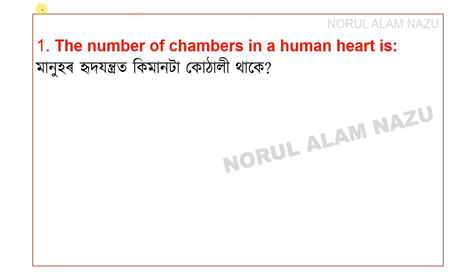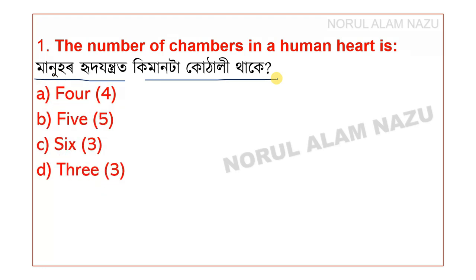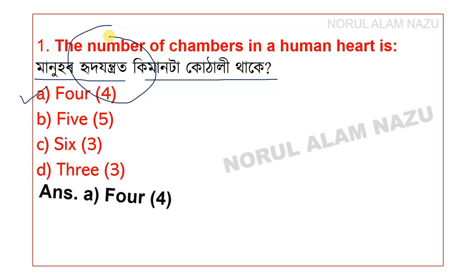Question 1: The number of chambers in a human heart. The options are 4, 5, 6, and 3. The answer is 4. The human heart has 4 chambers.